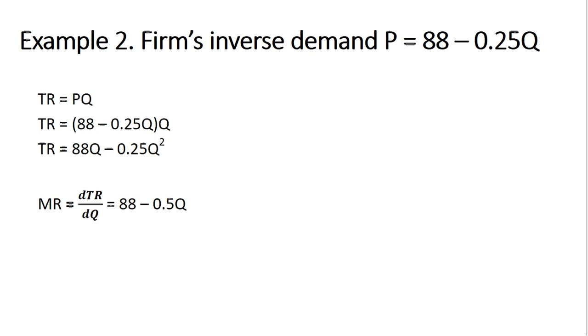Let's do another example. Example 2, we have another firm's inverse demand curve, price equals 88 minus 0.25Q. Deriving total revenue, doing our substitution in for the price, we have this. Multiplying through by Q,